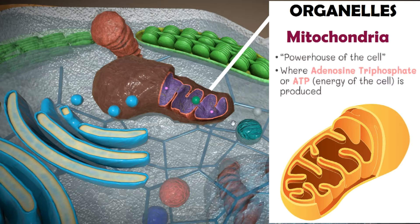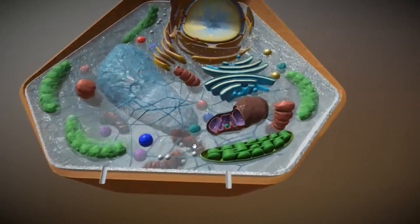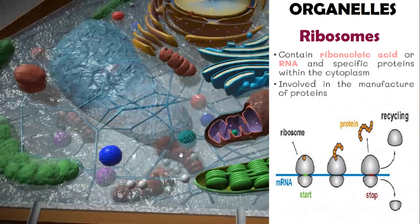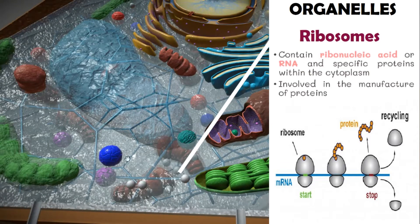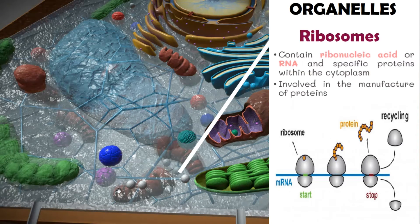Next, we have the ribosomes. Ribosomes are tiny organelles like dots that contain ribonucleic acid, or RNA, and specific proteins within the cytoplasm. Within the cell, ribosomes are directly involved in the manufacture of protein.